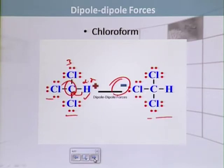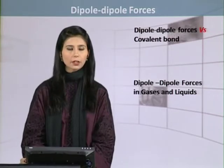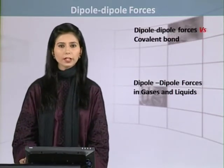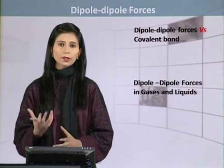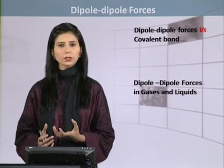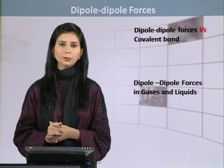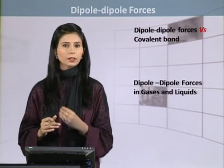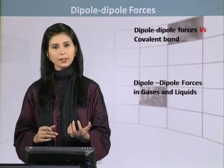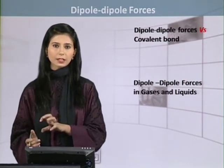Chloroform is also called trichloromethane — it has three chlorine atoms. Between two different chloroform molecules, a force arises which we call dipole-dipole force. Dipole-dipole force versus covalent bond: covalent bond is an intramolecular force and covalent bonds are the strongest bonds. Dipole-dipole forces are effective, but in comparison, dipole-dipole forces are weaker forces.